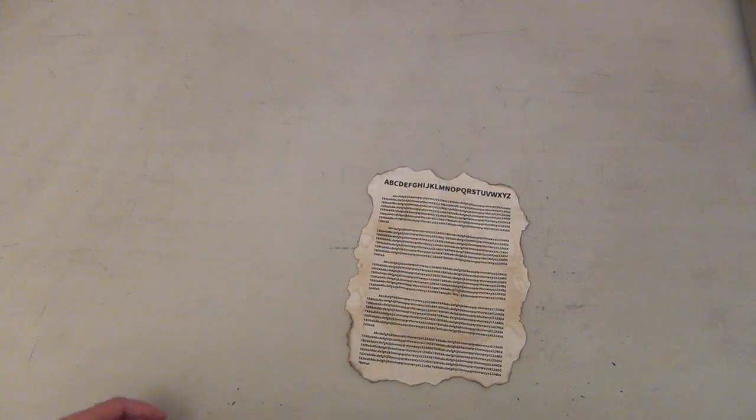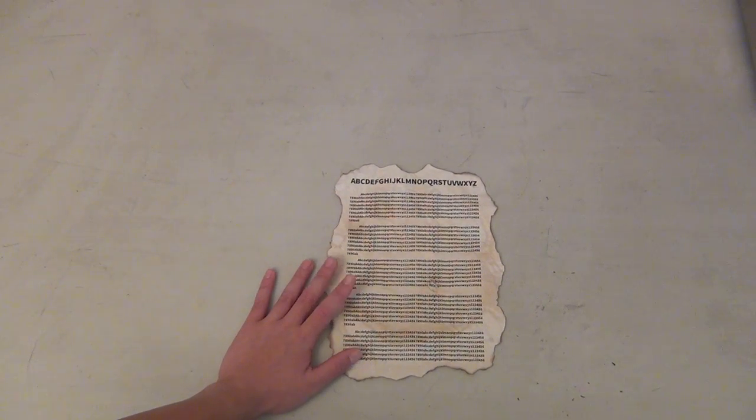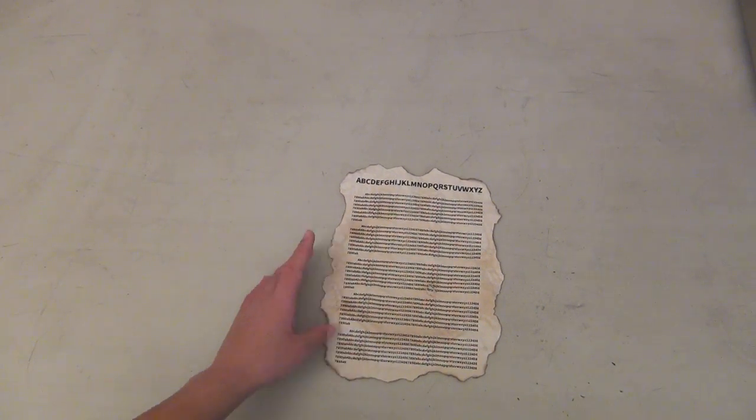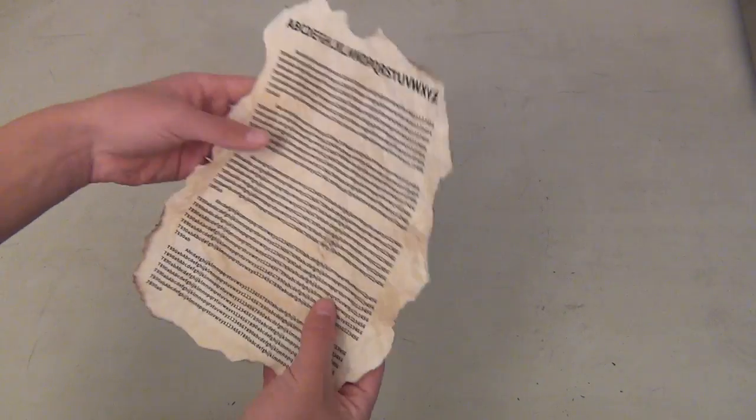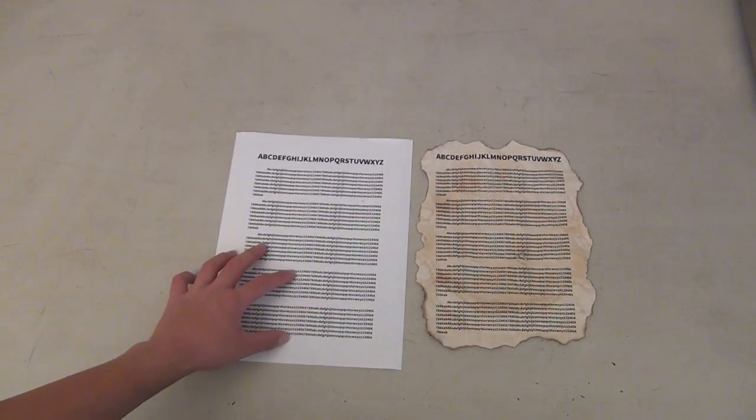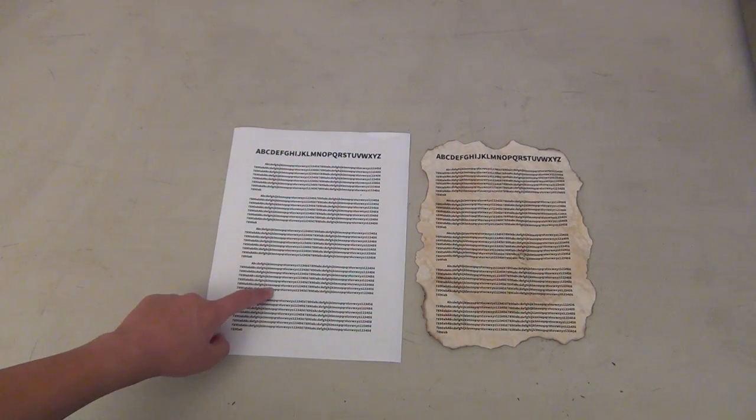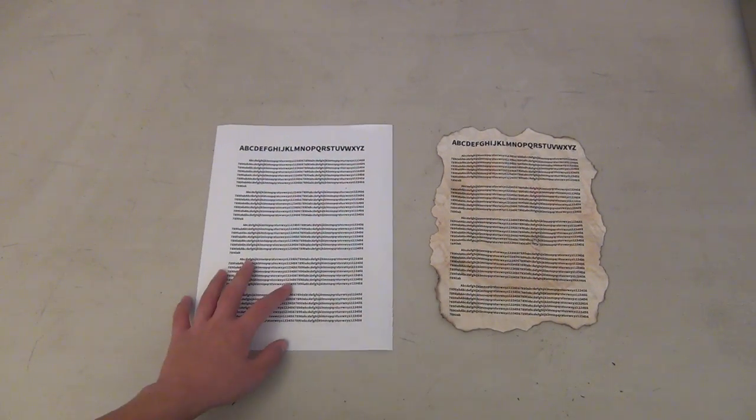Alright, that's it. So, now, after soaking it in coffee, drying it out, burning the edges, and crumpling it up, you now have a piece of paper that looks, and feels, pretty old. And just for comparison here, we've got, this is what it looked like before we did anything to it, and this is what it looks like after. So, just a little bit of comparison here.